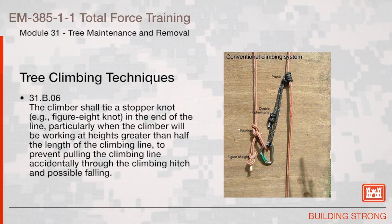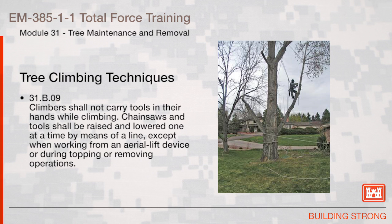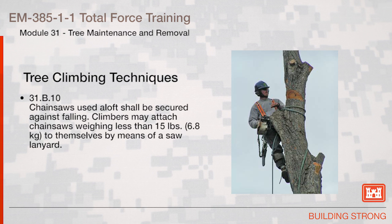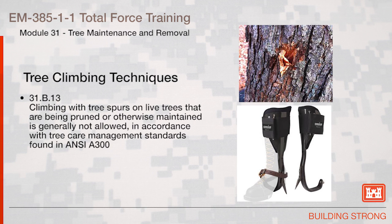The climber shall tie a stopper knot — for example, a figure-eight knot — in the end of the line, particularly when the climber will be working at heights greater than half the length of the climbing line, to prevent accidentally pulling the climbing line through the climbing hitch and possibly falling. Climbers shall not carry tools in their hands while climbing. Chainsaws and tools shall be raised and lowered one at a time by means of a line, except when working from an aerial lift device or during topping or removing operations. Chainsaws used aloft shall be secured against falling. Climbers may attach chainsaws weighing less than 15 pounds to themselves by means of a saw lanyard. Climbing with tree spurs on live trees that are being pruned or otherwise maintained is generally not allowed, in accordance with ANSI A300.